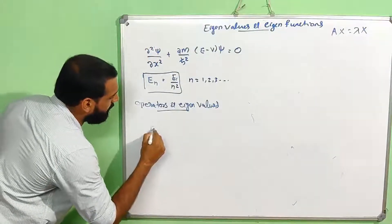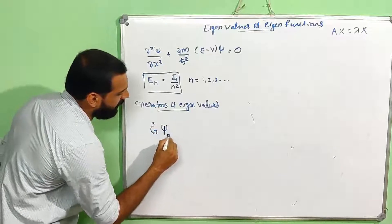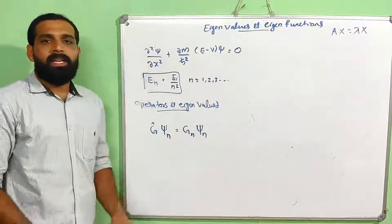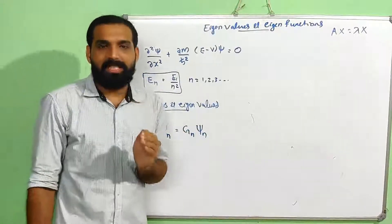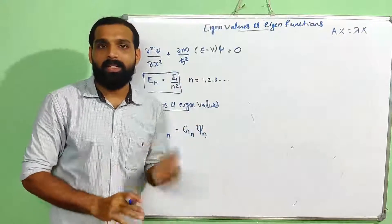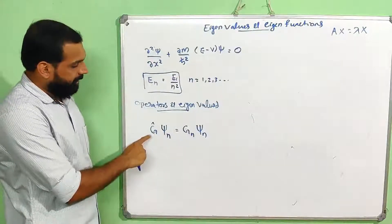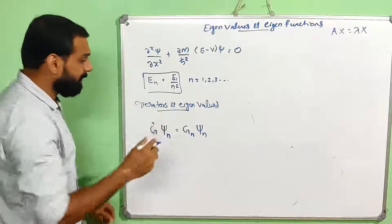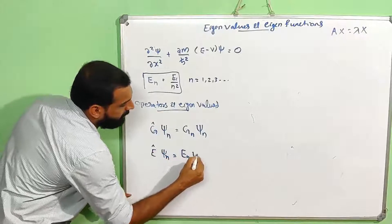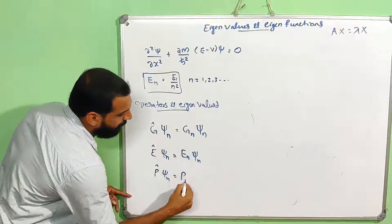There should be a condition of the form: some operator Ĝ acting on the wave function ψₙ equals gₙ·ψₙ. This must satisfy the condition Ĝψₙ = gₙψₙ. For example, the energy operator Ê·ψₙ = Eₙ·ψₙ, and the momentum operator p̂·ψₙ = pₙ·ψₙ.